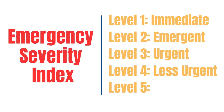The Emergency Severity Index is a five-level triage algorithm ranging from one to five, with level one being the most acute, most ill patient. It is used to prioritize patients in the emergency department based on the acuity of their condition and the anticipated resources needed. This anticipated resources needed is very important — we'll cover what the resources are shortly.